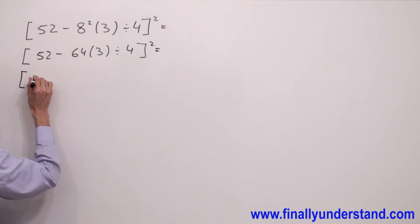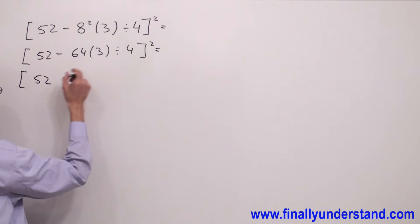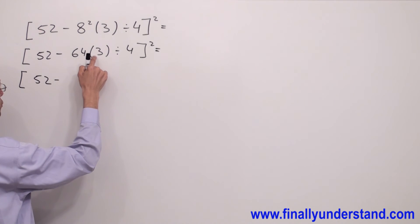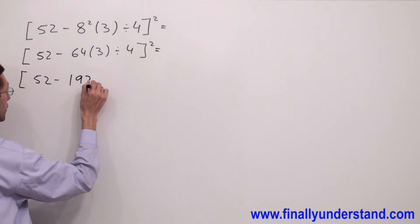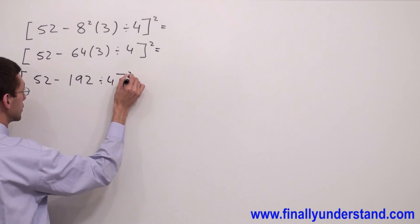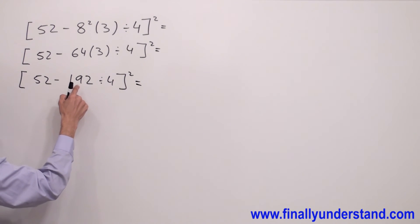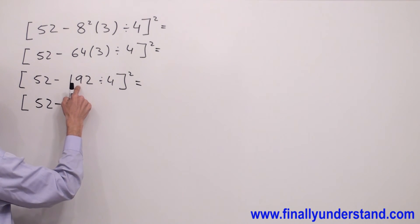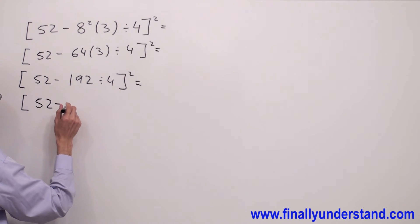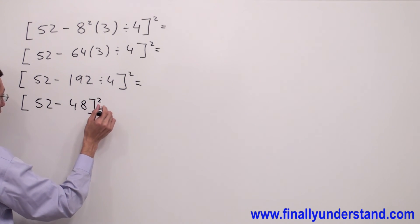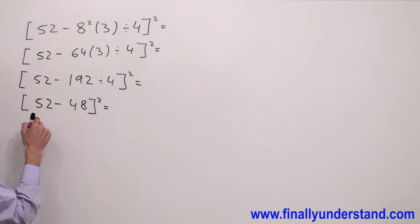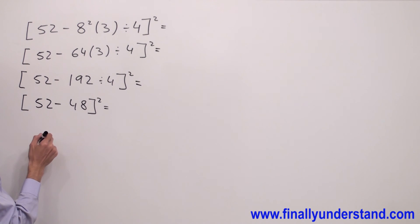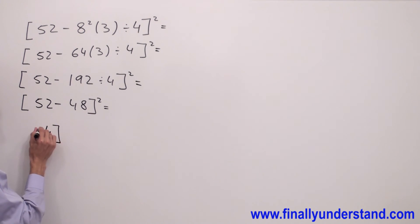I have 52. Next I have multiplication and division, and I'm supposed to perform these operations from left to right. 64 times 3 is equal to 192, divide by 4. Next I perform the division inside the brackets: 192 divided by 4 gives 48. So I have 52 minus 48, and everything is raised to the second power. Next I perform the subtraction inside the brackets: 52 minus 48 is equal to 4.